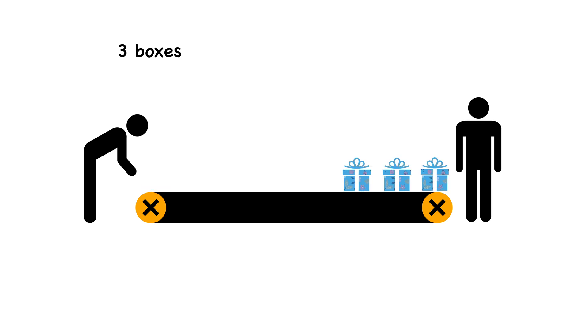In this example, we're sending three boxes across the conveyor belt, and we're placing boxes on the belt every second. And it takes two seconds for a box to travel across the belt.